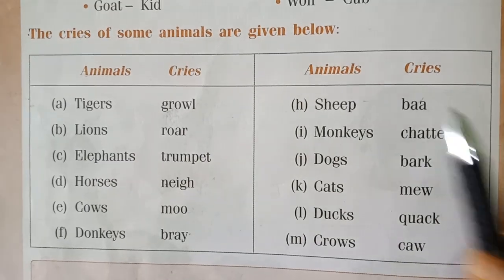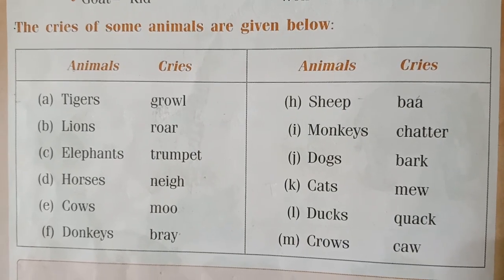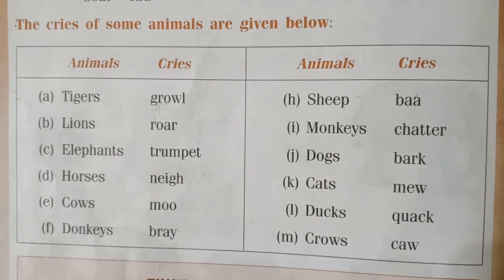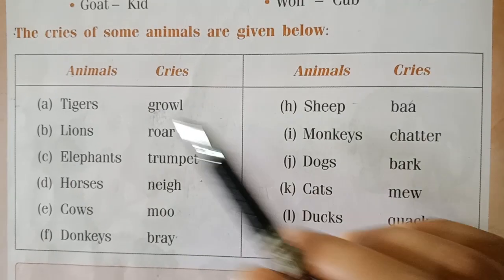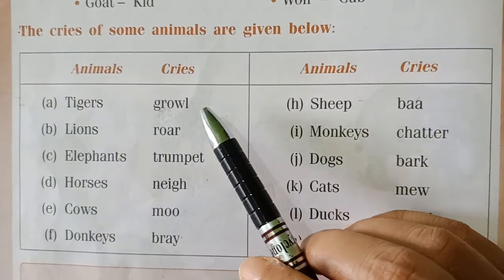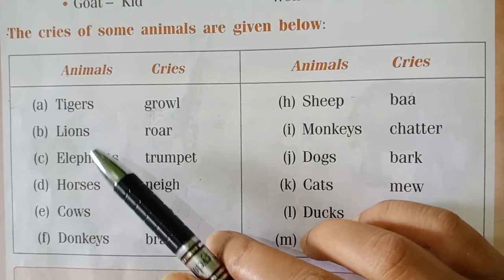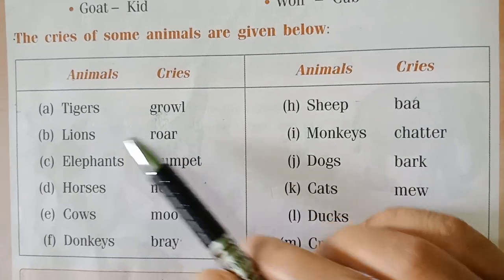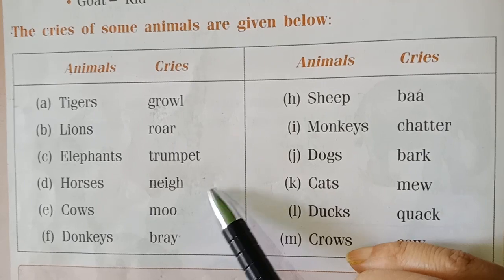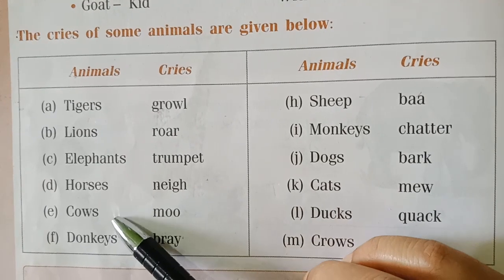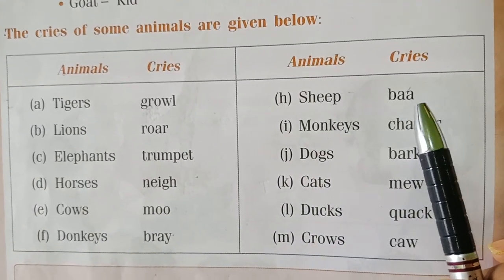Now we will know about the cries of some animals — the sounds made by animals. Tigers growl. Lions roar. Elephants trumpet. Horses neigh. Cows moo. Donkeys bray. Sheep baa.